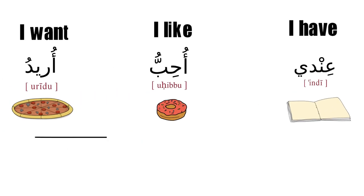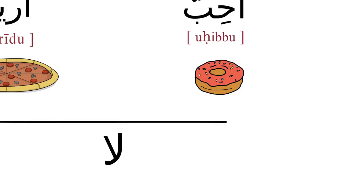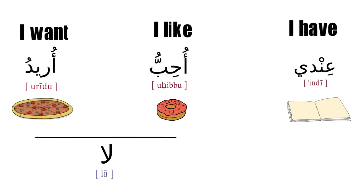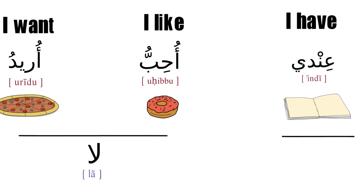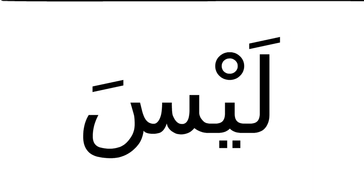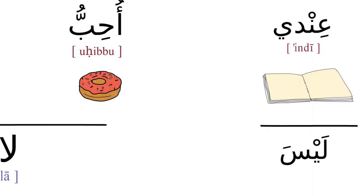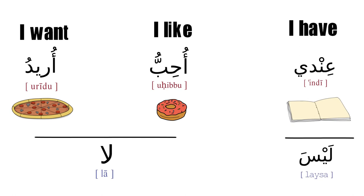For negation, we use لا before the verb for the first two verbs. So: لا أريد pizza — 'I don't want pizza.' لا أحب الكاك — 'I don't like cakes.' For عندي, because it's an adverb, we use ليس: ليس عندي كتاب — 'I don't have a book.'